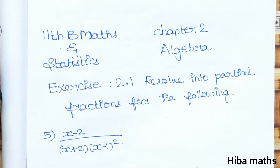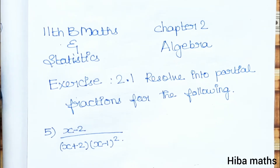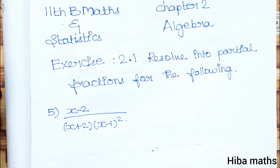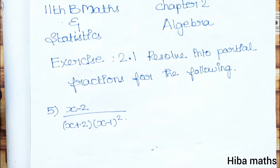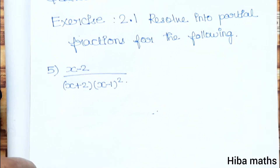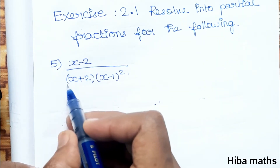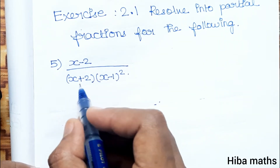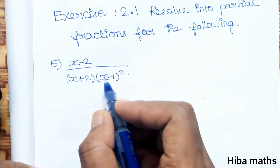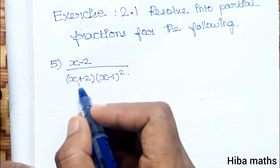Hello students, welcome to Hiba Max 11th standard business math and statistics, chapter 2 algebra, exercise 2.1 — resolve into partial fractions. For the following 5th question, we will solve it in the video. The question is: x minus 2 divided by x plus 2 into x minus 1 whole square.